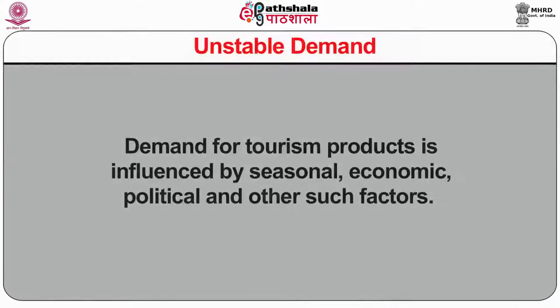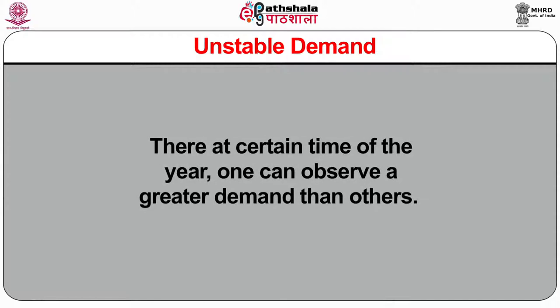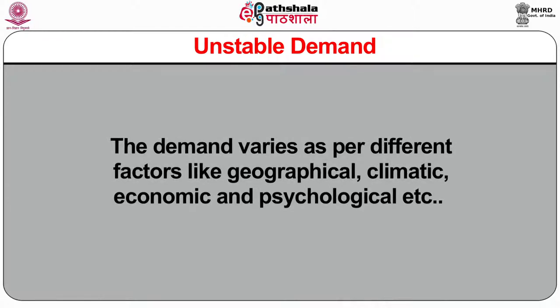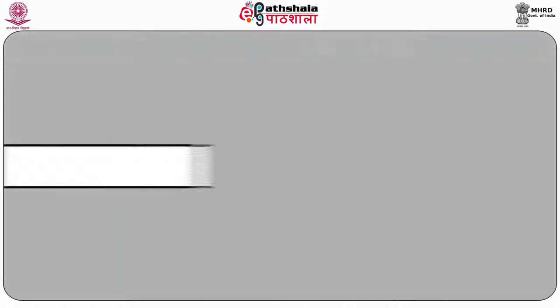Unstable demand. Demand for tourism products is influenced by seasonal, economic, political and other such factors. There are certain times of the year when one can observe a greater demand than others. The demand varies as per different factors like geographical, climate, economic and psychological, etc. Fixed supply in the short run. The tourism product, unlike a manufactured product, cannot be brought to the consumer — the consumer must go to the product in order to consume or experience it. This requires an in-depth study of users' behavior, taste preferences, likes and dislikes, so that expectations and realities coincide for the maximum satisfaction of the consumer.